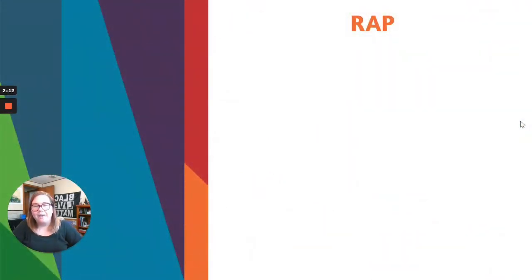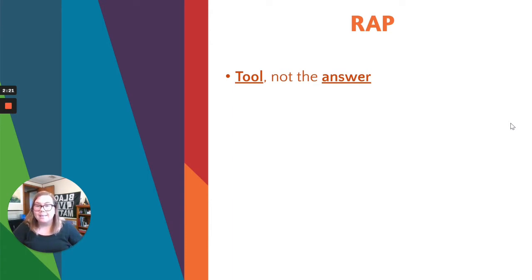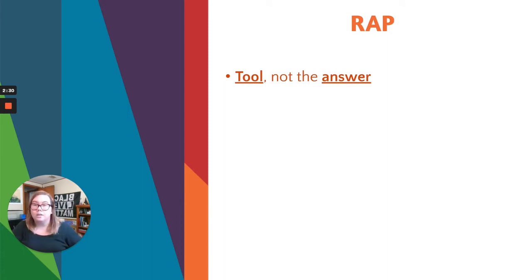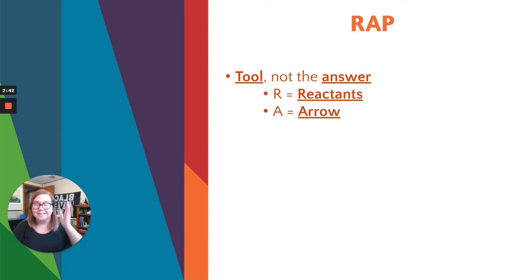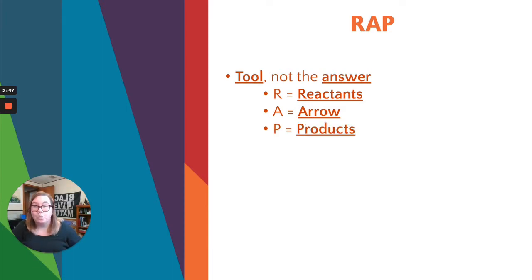So a tool that we have to help you balance reactions is called RAP. This is a tool — not the answer to any of our balancing problems. When we get to the examples, it'll help you understand the steps I'm about to explain, and also show you what the answer will look like to a balancing problem. In our RAP tool, those letters stand for something: R stands for reactants, A stands for the arrow in the middle of our chemical reaction, and P stands for products — what comes out of that chemical reaction.